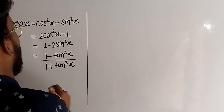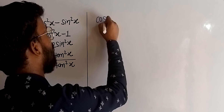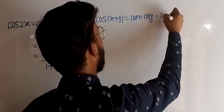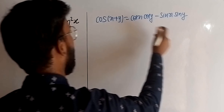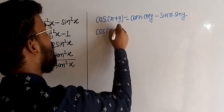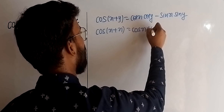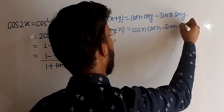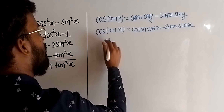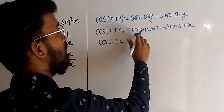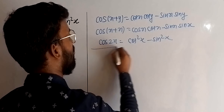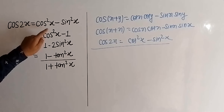Let us start with the first one. We know that cos(x + y) = cosx·cosy − sinx·siny. Here, if we substitute x in place of y, it will become cos(x + x), and here cosx·cosx and sinx·sinx. Now it will become cos2x = cos²x − sin²x. In this way, we get our first identity.